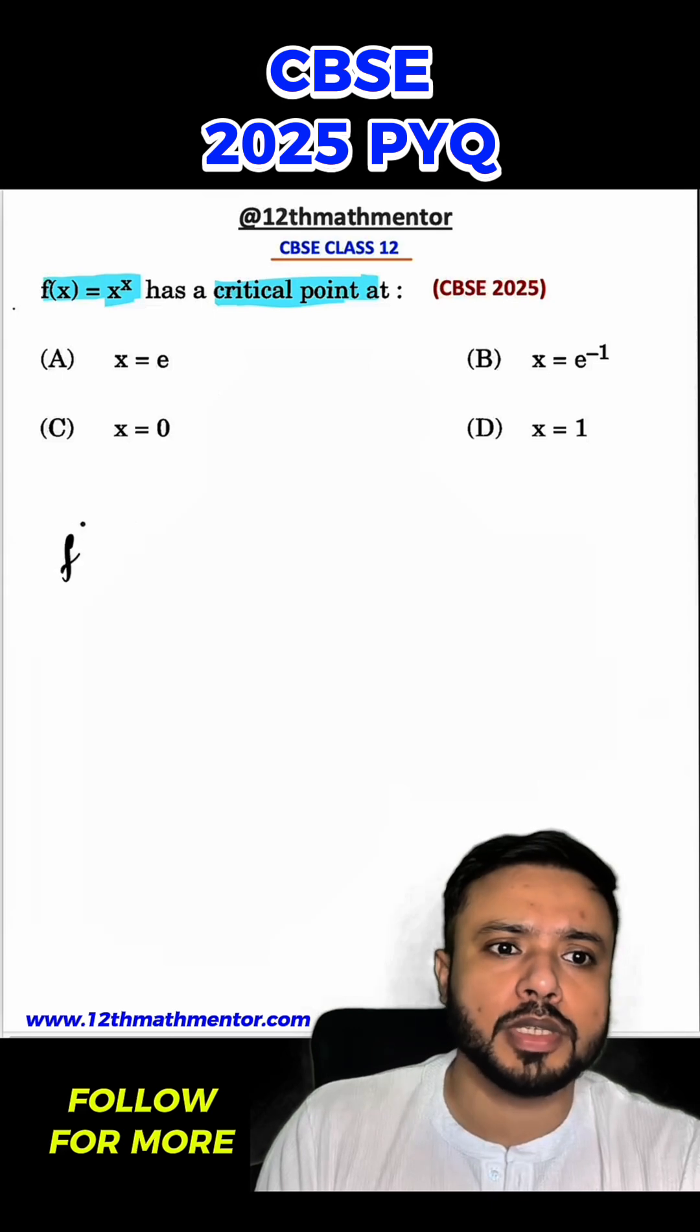We all know that a critical point is basically a point where f'(x) becomes equal to 0. So for that we'll have to differentiate this, so we will assume y = x^x.